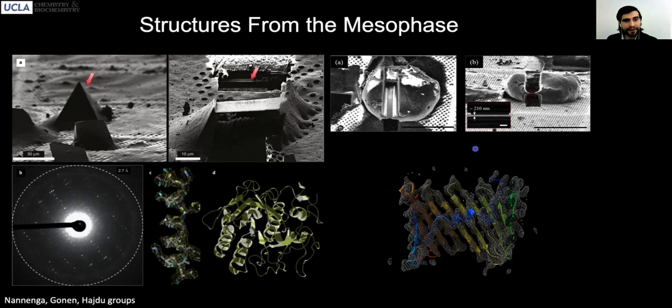It has been tremendously effective for globular proteins like the ones you see here. This is a nice pyramidal crystal shown here lying on top of a grid. You can see that crystal being ablated by the focused ion beam in the electron microscope. You can see here diffraction from the thin lamella that results. And you can see the wonderful molecular structure that is obtained from that lamella.